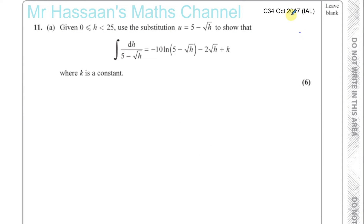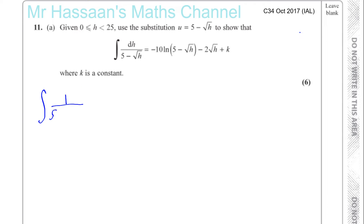Question 11 from October 2017 C34 IAL — an integration by substitution problem. We have to show that the integral of dh over five minus root h equals the given expression. Let's get started. I'm going to rewrite it in a more familiar form: one over five minus the square root of h, dh.